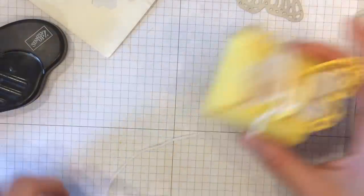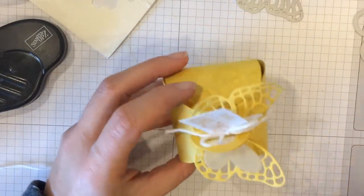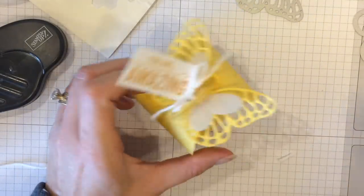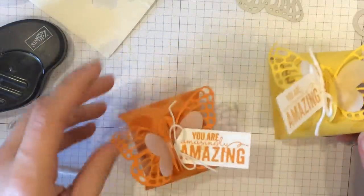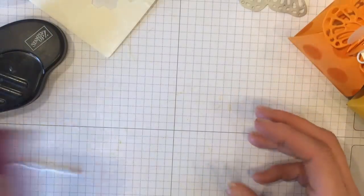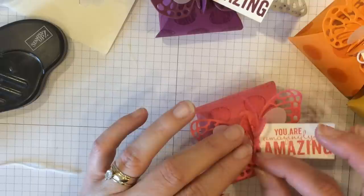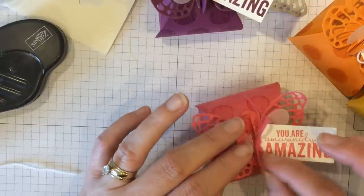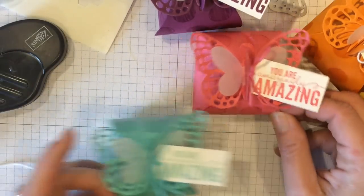And there you have it. Really easy and fast if you need to make a bunch of something. You guys know I do not like mass producing. But this was easy. So I did Daffodil Delight, Pumpkin Pie, Rich Razzleberry, Strawberry Slush because I like to use the monochromatic look and we have the twine for that. And also Coastal Cabana with a Coastal Cabana twine.